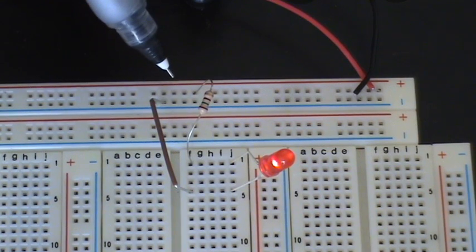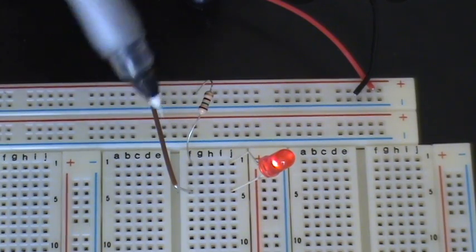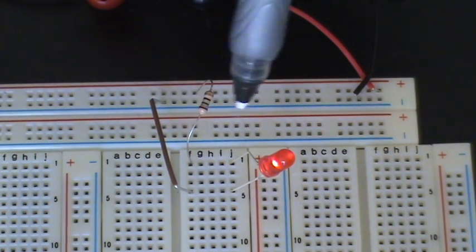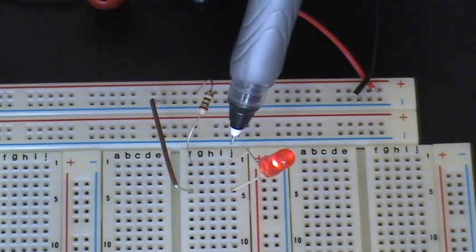The only thing connected to it is this resistor right here. So the electricity flows through the resistor, and it goes to any of the top line. Now, the only thing connected to that top line is the LED light, the positive end of it. And that's what we wanted.